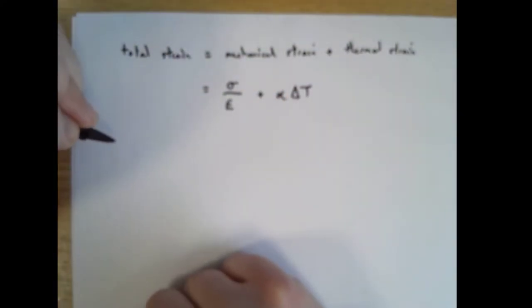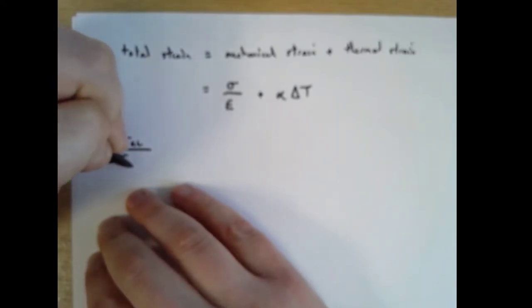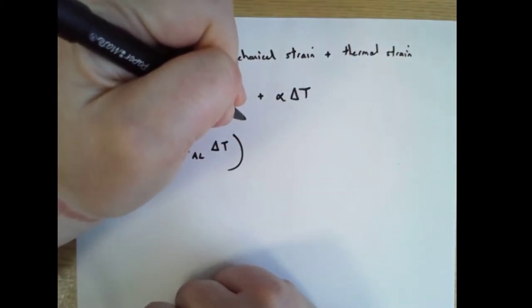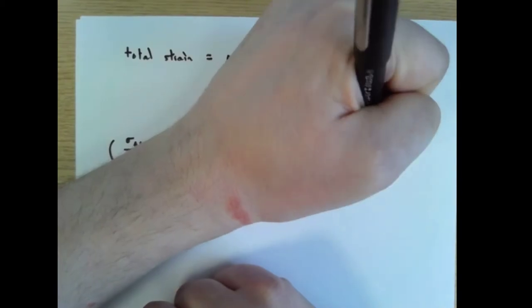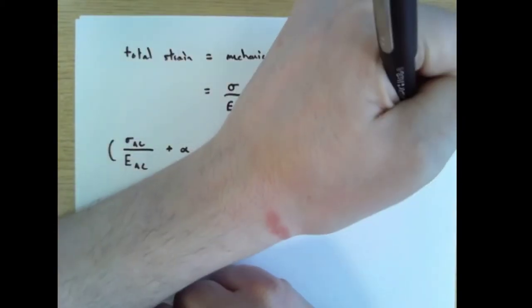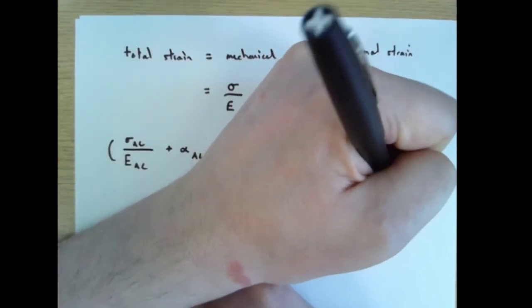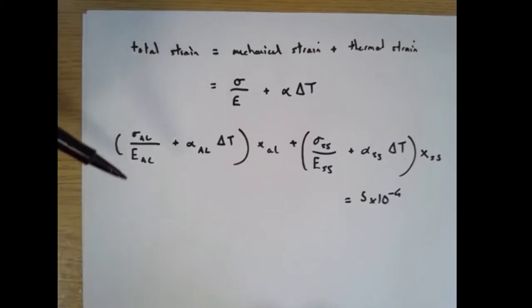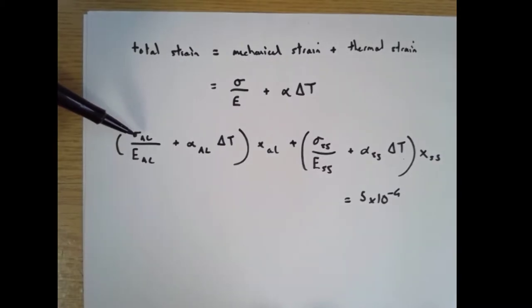So now I can say: the quantity (sigma_Al over E_Al plus alpha_Al times delta T) multiplied by x_Al, plus (sigma_SS over E_SS plus alpha_SS times delta T) multiplied by x_SS equals 5 times 10 to the minus 4 metres. The good news is we know almost all of these things — we know E, alpha, delta T, and X in both cases. So the only unknowns are sigma_Al and sigma_SS.